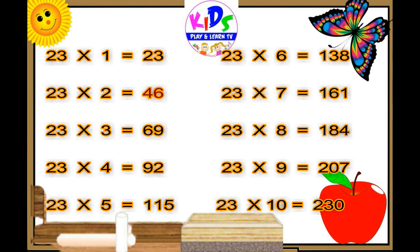23 1s are 23, 23 2s are 46, 23 3s are 69, 23 4s are 92, 23 5s are 115.